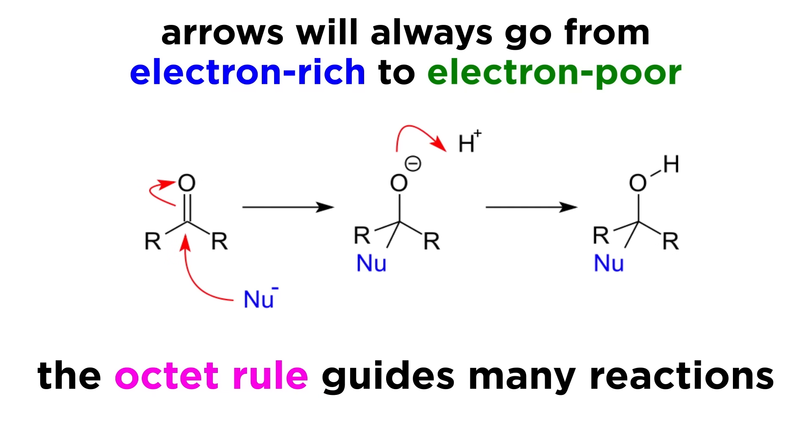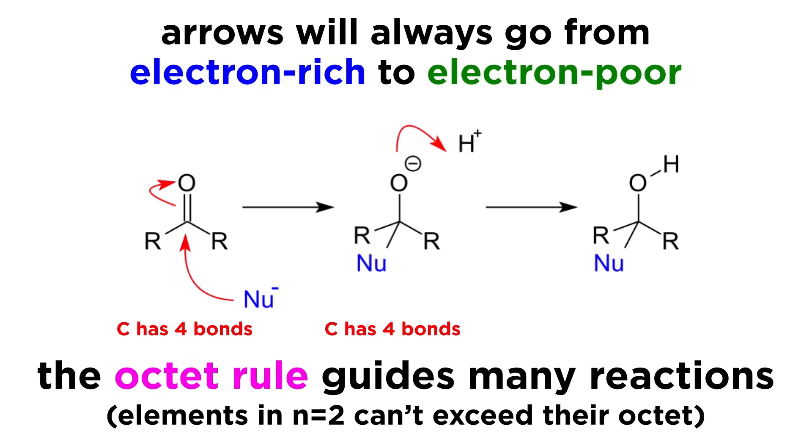Finally, we want to understand that the octet rule will guide many reactions. The most important aspect of this is that elements in the n=2 shell can't exceed their octet. Carbon can only make four bonds, so if it is to accept a bond from an incoming nucleophile, it must also lose a bond. This way it can maintain its octet.